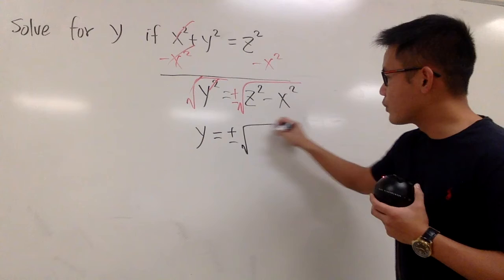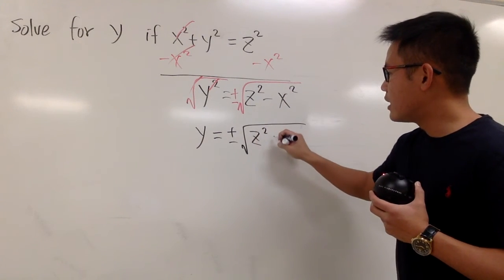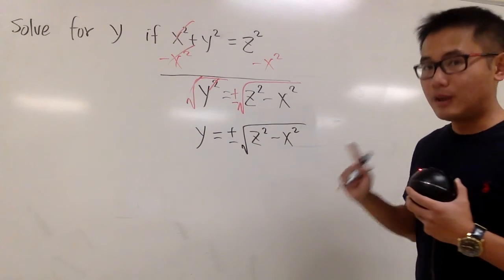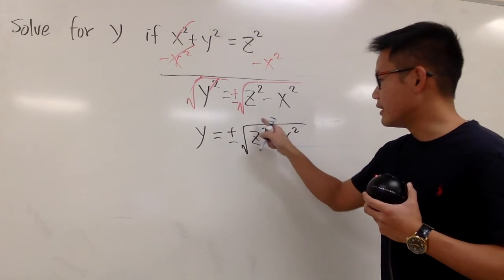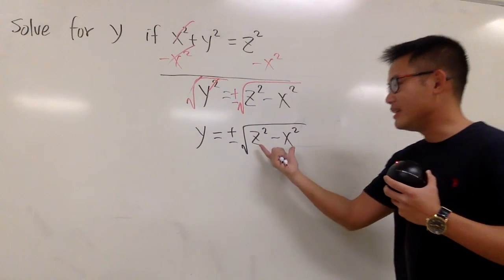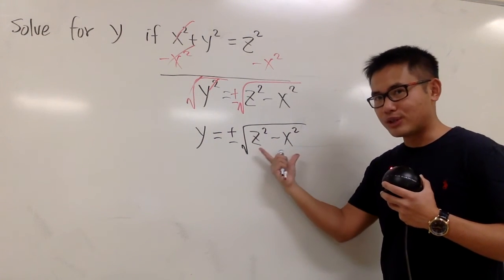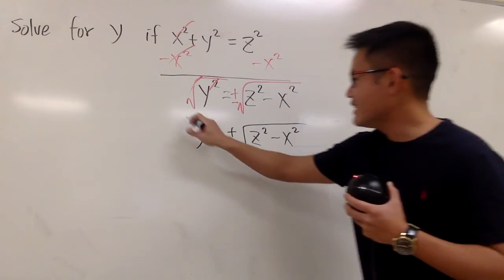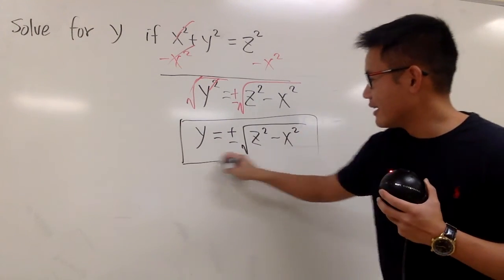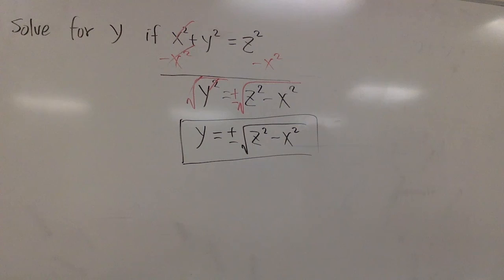But anyway, you write down the plus, minus, square root, z squared, minus x squared. And once again, don't cancel out the square and the square root. The reason is because inside here, we have to do the subtraction first of the squares. Anyway, this is it. We have to do the subtraction first.